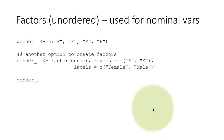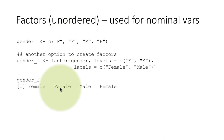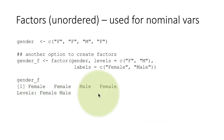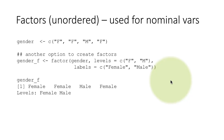Now if I type gender_f, I'll see female, female, male, female — because f has been associated with female and m has been associated with male. When printing the factor, you see the friendly labels. The levels line now shows: Levels: female male. The difference from as.factor is that here we have more control — we specify different labels for each level rather than using the values themselves as labels.